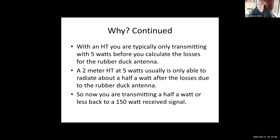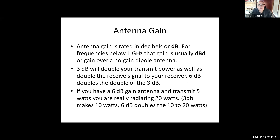An HT on two meters is five watts before you calculate losses from a rubber duck antenna. About half the power gets out of that antenna — the rubber dummy load, as we like to call it. So you're transmitting anywhere from half a watt or less, depending on how you're operating your HT. Your antenna gain is a big part of power budgets.